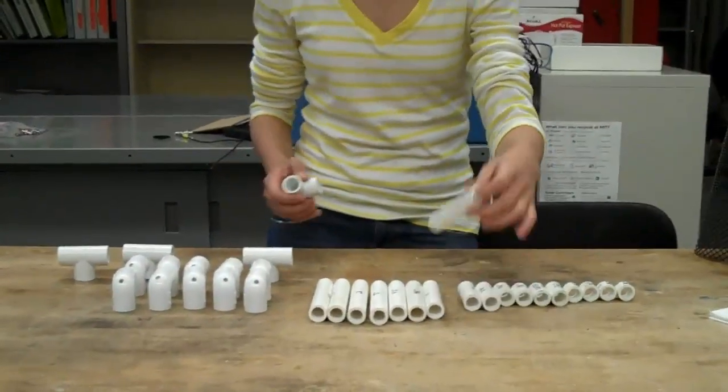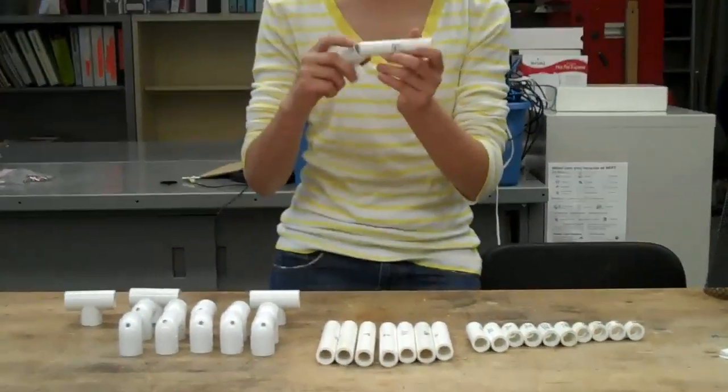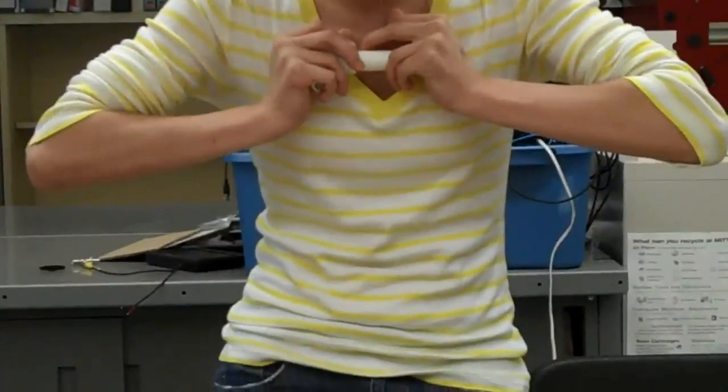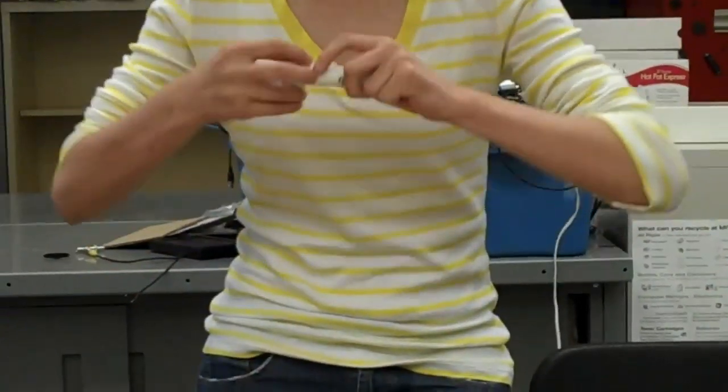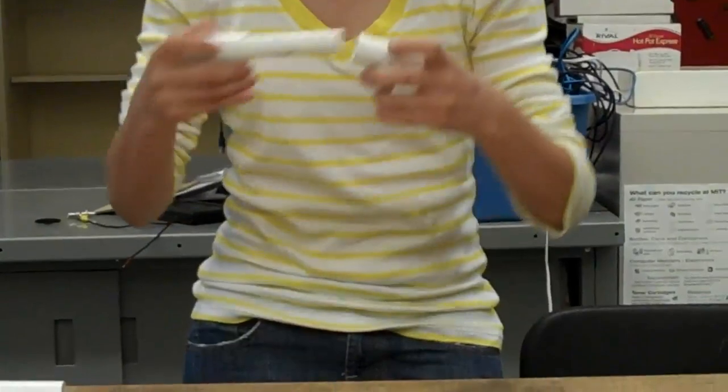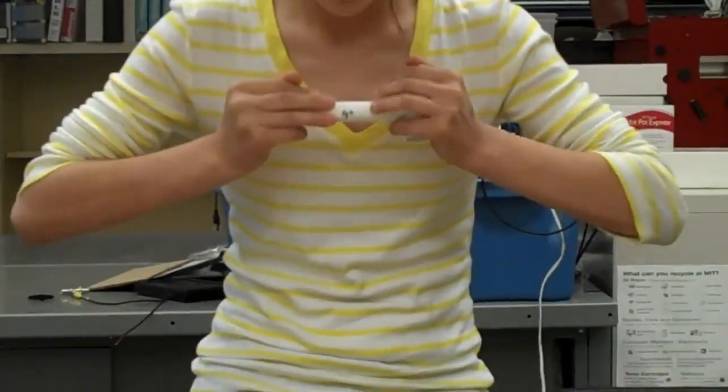To begin, we're going to take the four-inch pieces and put two T-joints on the end. You can press firmly until it won't go any further. Do the same for the other four-inch piece.